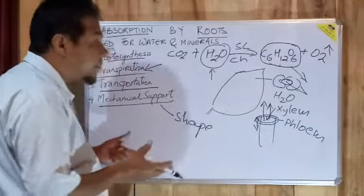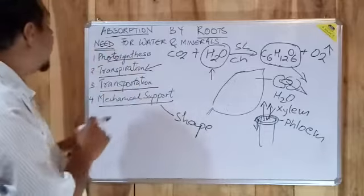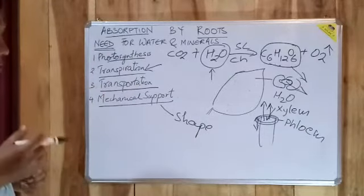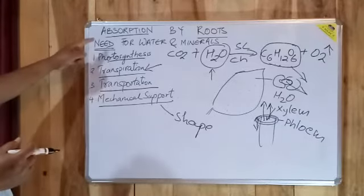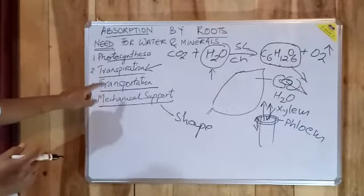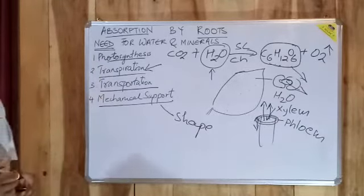Therefore, absorption of water and minerals from the roots basically is needed by the plant for photosynthesis, for transpiration, for transportation, and for mechanical support of the plant.